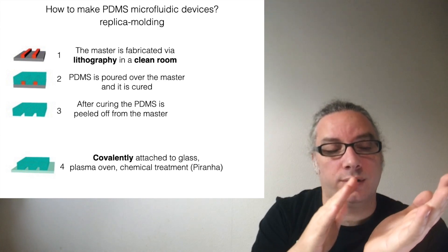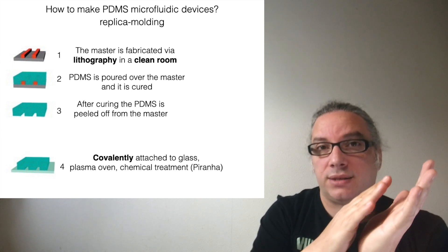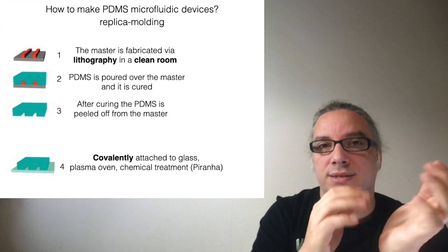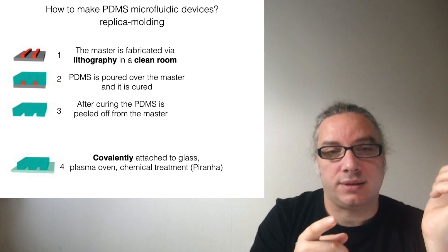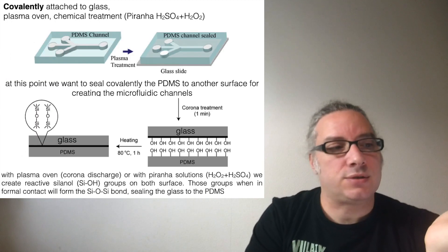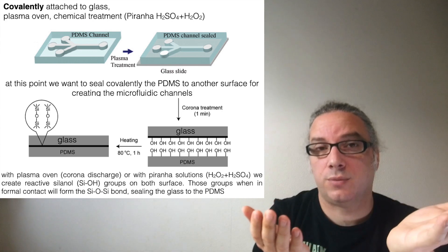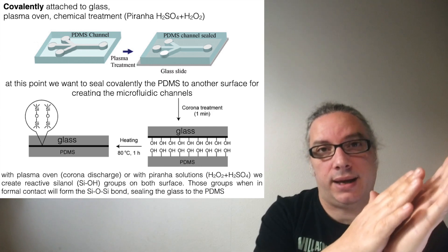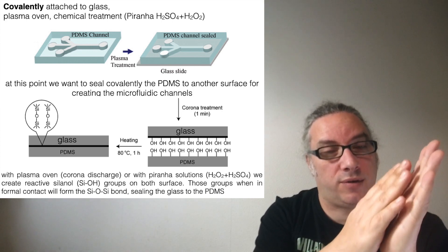This sealing is done with plasma cleaning. When you put the PDMS on glass, it will be covalently attached — this is important because you don't want delamination. If I just put a piece of plastic on top of glass, you can remove it. The idea here is that it's covalently attached: the plasma oxidizes both surfaces, so both the glass and the PDMS now have reactive hydroxyl groups. When you put them together and put them in the oven, you form a silyl ether bond between them, and now they are covalently attached.